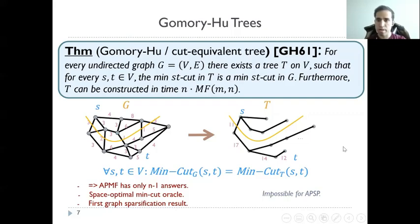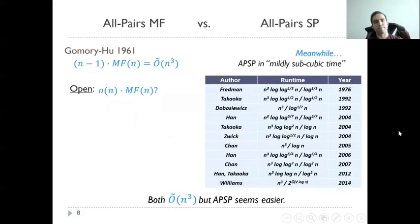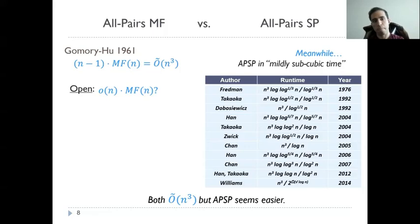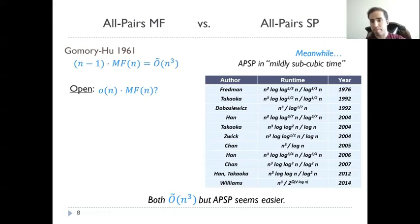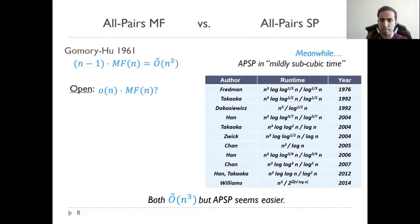Gomory-Hu trees have favorable properties that can never be true for all-pairs shortest path (APSP). Ever since 1961, the question was whether Gomory-Hu tree can be solved faster than n applications of maximum flow — no algorithm could do that, not even shaving log n factors. The situation has been very different for APSP, where mildly subcubic algorithms have existed, most recently with the algorithm by Ryan Williams. Both problems can be solved in n-cubed time, but APSP seems easier.